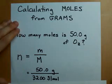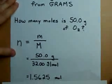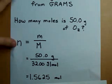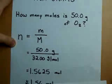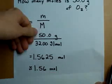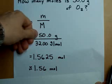When you put this through your calculator, you end up with 1.5625 moles, but if you want that in significant digits, you have to shorten it to 1.56 moles because you only have three significant digits here.